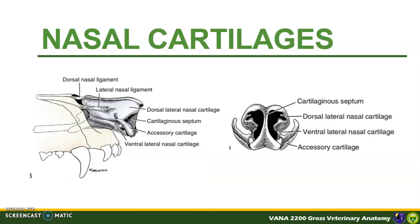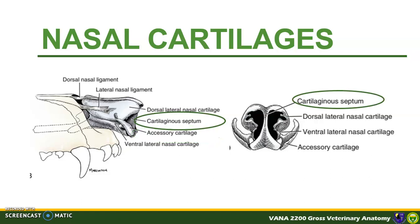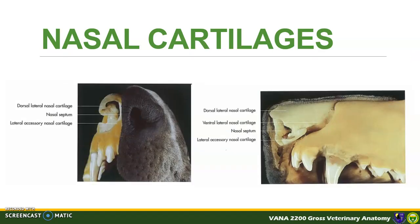Nasal cartilages are structures giving the nose its structural appearance. There is a paired dorsal-lateral nasal cartilage and ventral-lateral nasal cartilage. An accessory cartilage is also present. The nasal septum is a cartilaginous septum or a perpendicular median plate separating most of the nasal airway into right and left nasal cavities. Please note that the size and shape of the nostrils are dictated by the nasal cartilage.